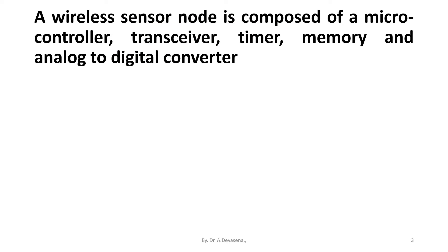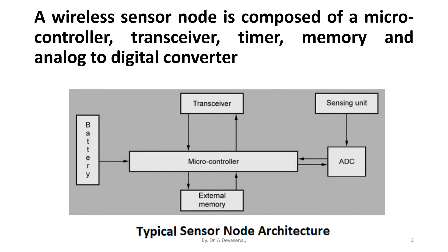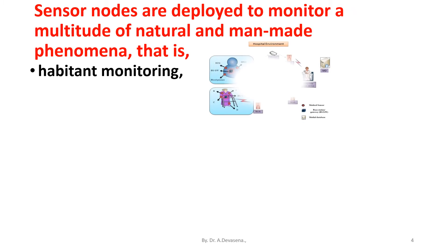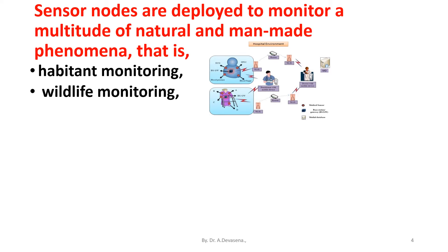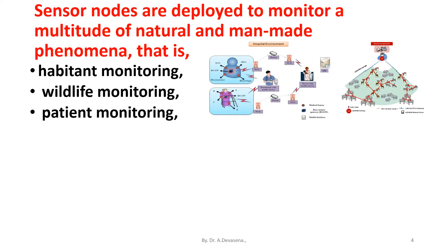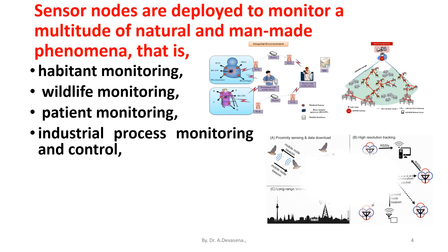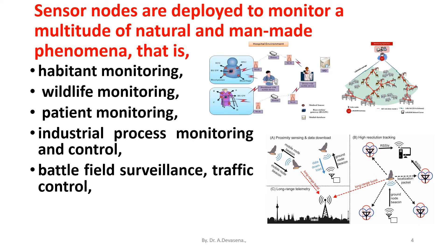A wireless sensor node is composed of a microcontroller, transceiver, timer, memory, and analog-to-digital converter. Here is a representation of the block diagram. Sensor nodes are deployed to monitor a multitude of natural and man-made phenomena, including habitat monitoring, wildlife monitoring, patient monitoring, industrial process monitoring and control, battlefield surveillance, traffic control, and home automation.